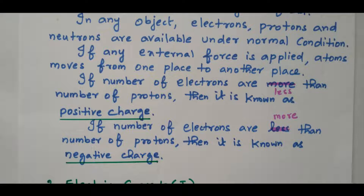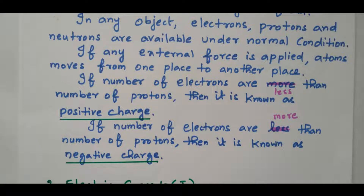While applying external force, the electrons are moving from one place to another place. This movement — the number of electrons, the energy, the power — everything comes based on the movement of the atom. That movement of atoms is nothing but current. How many atoms are moving refers to potential, potential difference, energy and power. All other terms are purely based on the movement of the electron while applying external force.